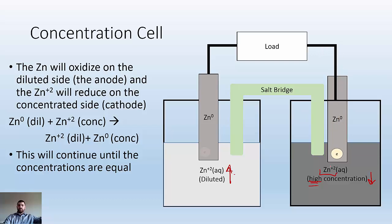The zinc on the diluted side is going to give up electrons, oxidize, and diffuse into solution. The zinc ions on the other side are going to get reduced and plate onto that electrode. The concentrations are going to keep changing. The diluted side goes up, the concentrated side goes down until they are equal. Once they're equal, it's done. No more potential, no more reason to keep going.